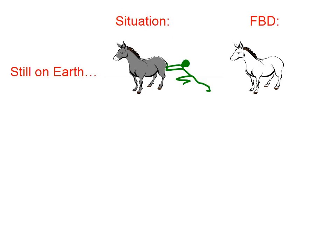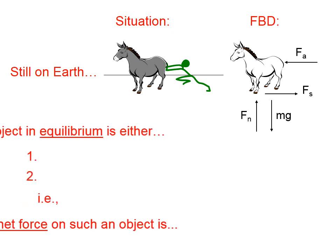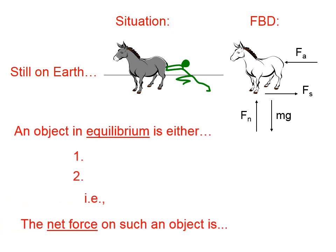Now let's take the case of the donkey being pushed by a green alien. The free body diagram would have the weight acting downward, m times g, the normal force from the surface of the Earth holding the donkey up, the force from the alien pushing to the left, and static friction pushing to the right. The normal force and the weight are exactly equal in magnitude and cancel each other, and the applied force from the alien is exactly cancelled by the static friction force. This donkey also is in equilibrium — there is no net force on this donkey either.